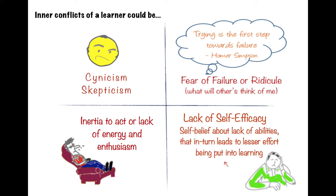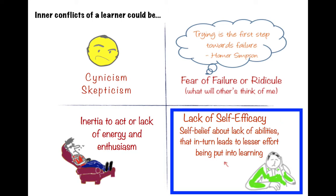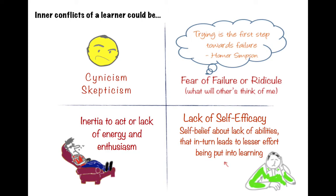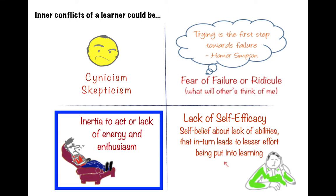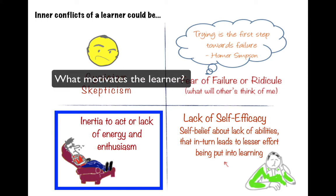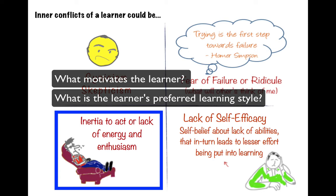A learner facilitator needs to curate learning resources keeping in mind possible inner conflicts that the learners may be facing. For example, if the learner lacks self-efficacy, a learner facilitator will need to scaffold the learning experience such that attempting easier tasks initially builds the learner's self-belief in their own abilities, and then the learner gradually moves to doing more complex tasks. Or if the learner lacks energy and enthusiasm, the learner facilitator will need to consider what motivates the learner and what is their preferred style of learning, then curate resources that map to the learner's motivation and learning style.